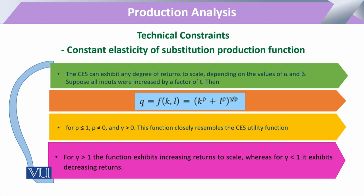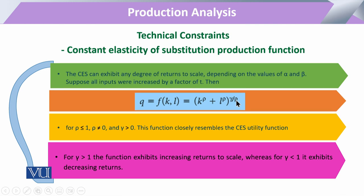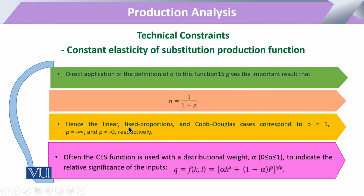The elasticity of substitution is equal to the ratio of capital to labor divided by the change in the rate of technical substitution, which equals 1 divided by (1 minus rho). The linear fixed proportion function and the Cobb-Douglas all correspond to this formula by changing rho: when rho equals 1 we get the linear production function, when rho equals 0 we get Cobb-Douglas, and when rho equals infinity we get the fixed proportions case.